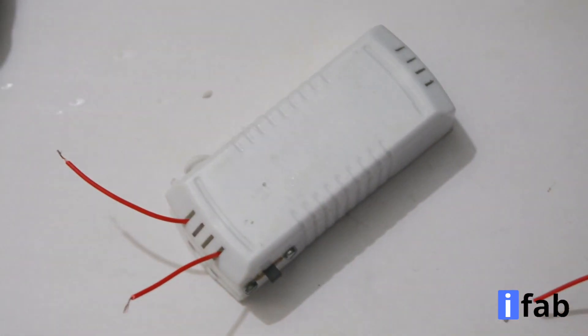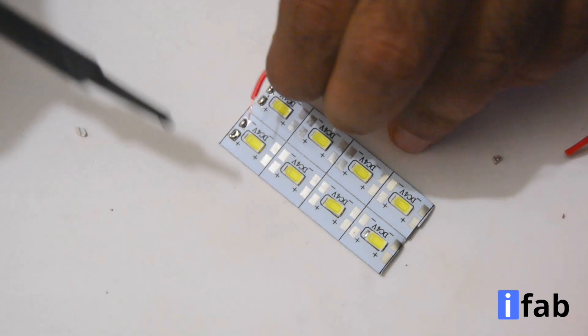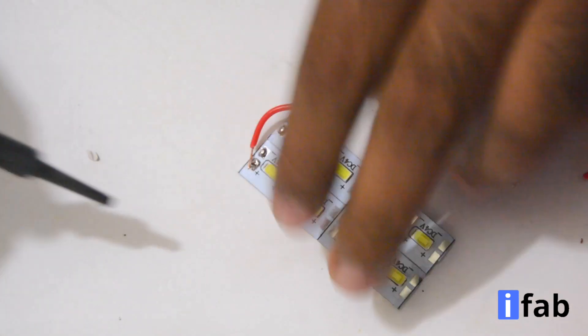Your emergency lamp case is now ready. Now take the LED strip. Let us solder the terminals, that means positive to positive and negative to negative.